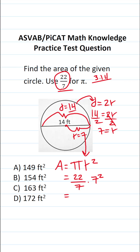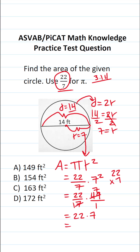Working this out: 22 over 7 times 7 squared, and 7 squared is 49. Writing 49 as a fraction over 1, we can cross-reduce: 7 goes into 7 one time, and 7 goes into 49 seven times. This becomes 22 over 1, which is just 22, times 7 over 1, which is just 7. So the only thing left to do is 22 times 7.